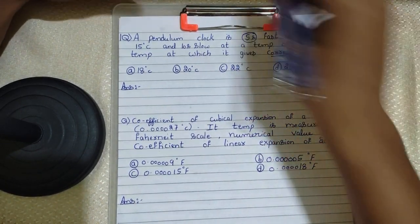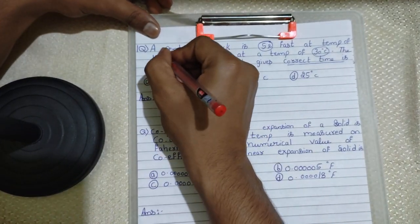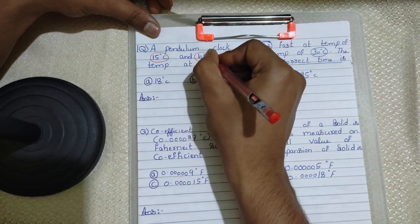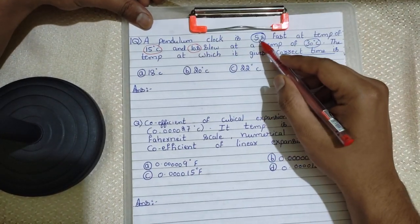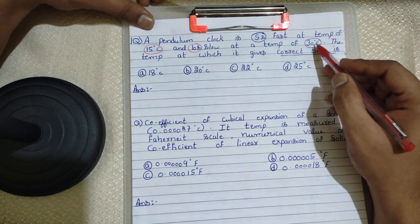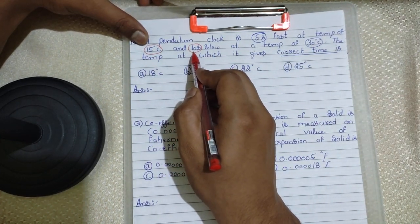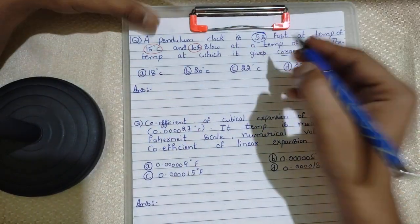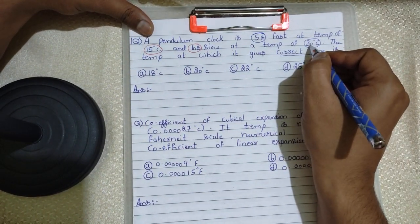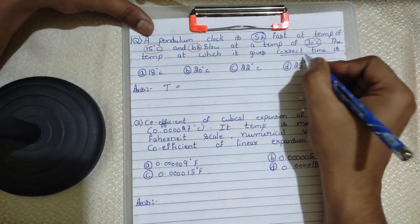Note 15 degrees Celsius and 10 seconds — one time quantity and one temperature quantity, and another temperature quantity and time quantity. We have to note them. Now look at these two quantities and multiply them: 30 into 5. We have to calculate the correct timing.